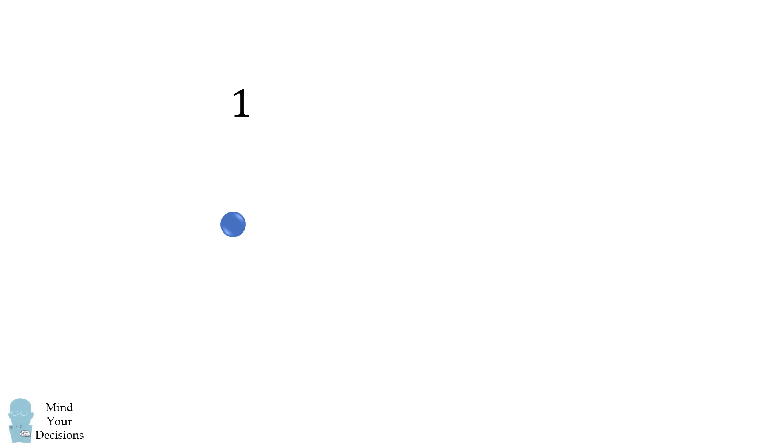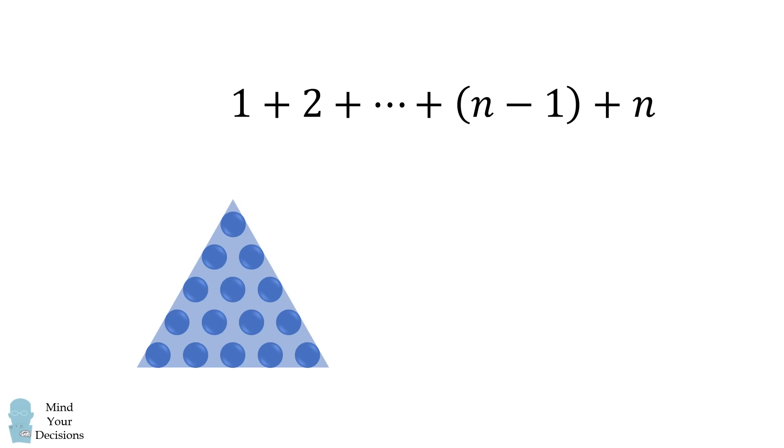Suppose you want the sum of 1 plus 2 plus 3 and so on all the way up to n. This is exactly equal to the number of dots in this equilateral triangle arrangement. For this reason, each such number is known as a triangular number and is denoted as tn.